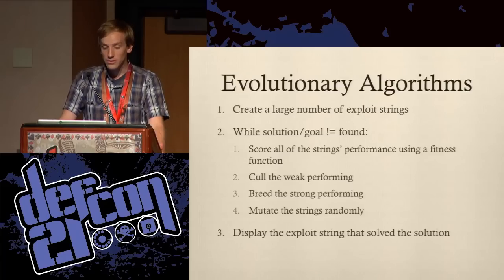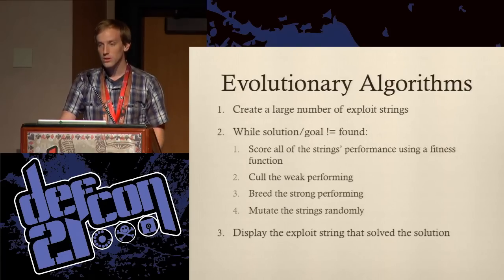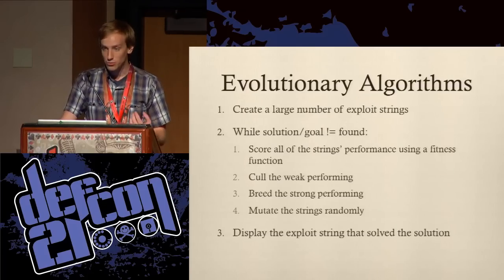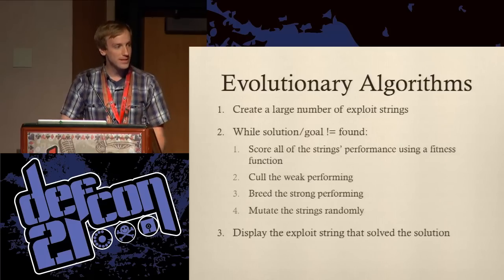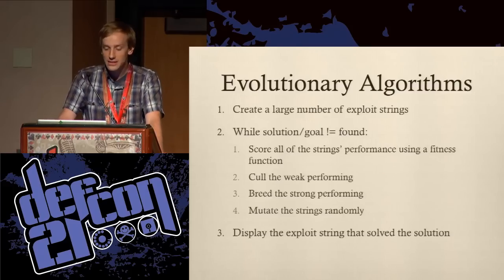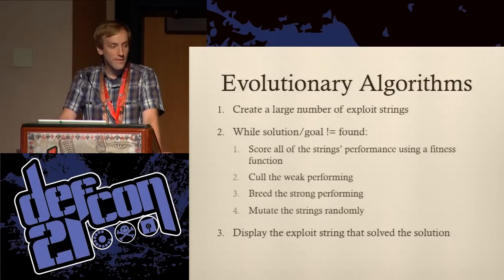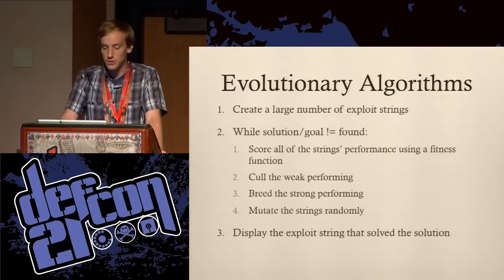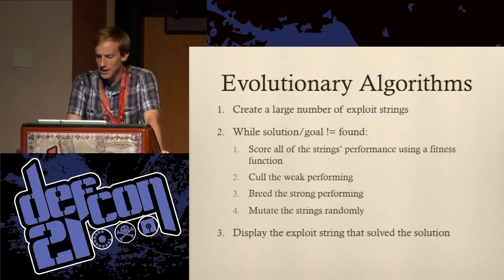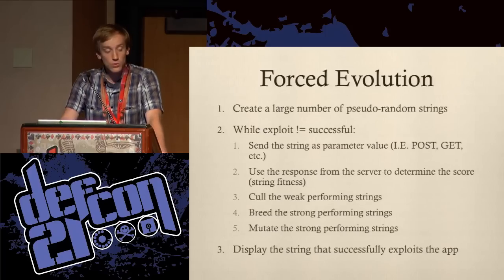Our algorithm is a loop: while we haven't found the solution, we score. We kill off all the low-performing strings, we breed the strong-performing strings — the ones that are more efficient, that bypass or exploit better. We also mutate the strings randomly. And once we've found a correct exploit, we display it.